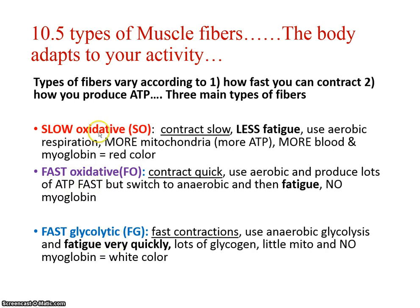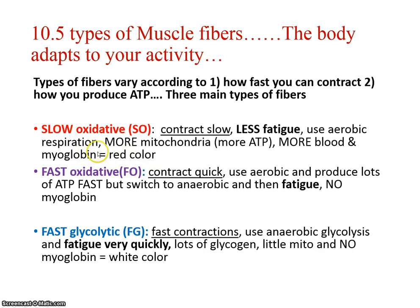There are three main fiber types: slow oxidative, fast oxidative, and fast glycolytic — indicating presence of oxygen. Slow oxidative contracts slowly, is less likely to fatigue because the demand is not quick or intense, uses aerobic respiration, develops more mitochondria to produce more ATP meaning less fatigue, has more blood supplied and more myoglobin, which provides a red or dark color. This is your dark meat.